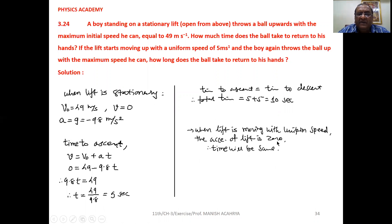When lift is moving up with uniform speed, speed of the lift is uniform, constant, means acceleration is 0.